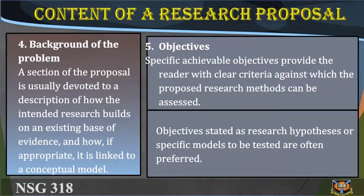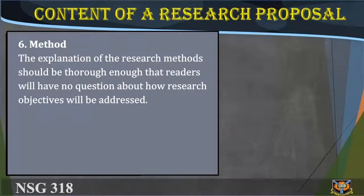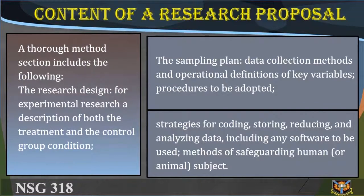Objectives: Specific, achievable objectives provide the reader with clear criteria against which the proposed research method can be assessed. Objectives stated as research hypotheses of specific methods to be tested are often preferred. Method: The explanation of the research method should be thorough enough that the reader has no questions about how research objectives will be addressed. A thorough methods section includes the research design, a description of treatment and control group conditions for experimental research, the sampling plan, data collection methods, operational definitions of key variables, procedures for coding, storing, reducing, and analyzing data including any software to be used, and methods of safeguarding human or animal subjects.